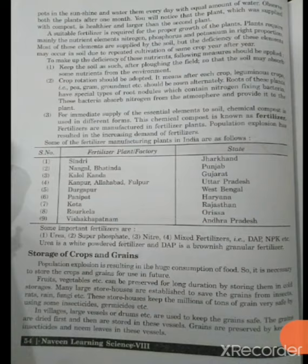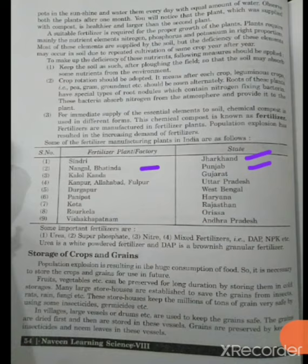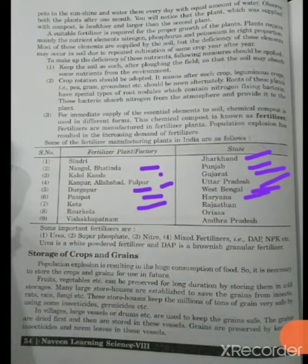Now we will see some fertilizer plant factories and which states they belong to, as this may be asked in short answer or objective type questions. The first fertilizer plant is Sindhri, located in Jharkhand; Nangal Bhatinda in Punjab; Kalol Kanda in Gujarat; Kanpur, Allahabad, and Phoolpur in Uttar Pradesh; Durgapur in West Bengal; Panipat in Haryana; Kota in Rajasthan; Rourkela in Haryana; and Visakhapatnam in Andhra Pradesh.